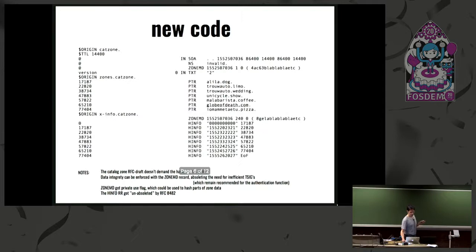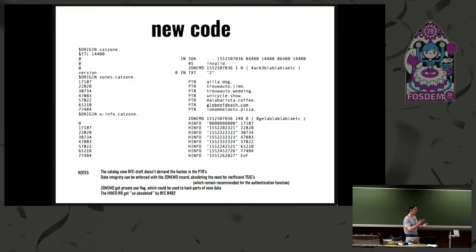The main important thing I added is simply a ZONEMD record, which I use for the integrity of the data. It's a new record — still a draft. You see the number 240 in that line — that is a field reserved for private use. You can use it for putting hashes of parts of your records, or even just part of the value of a resource record. I use it to generate a list of domain names that I can compare in other daemons — checking if they're present or not — and then issue vendor-specific commands to do your mutations.